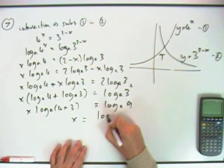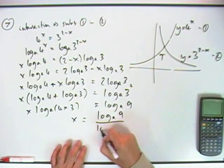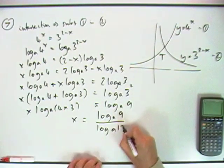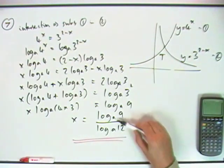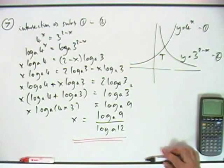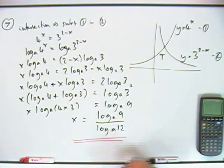And then finally x is going to be log A of 9 divided by log A of, and 4 threes are 12. There you go, there's the x coordinate of that point of intersection, where A could be any number you like. So you could evaluate that, you've always got the same answer.